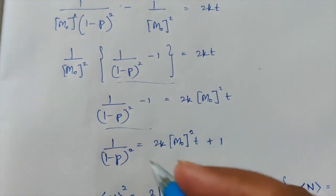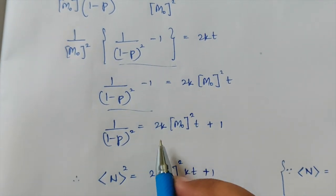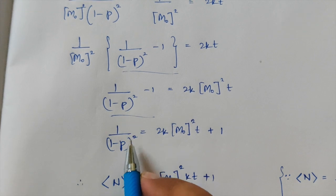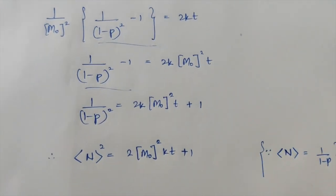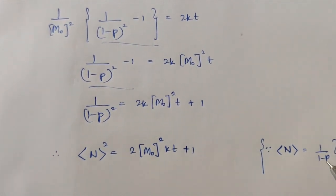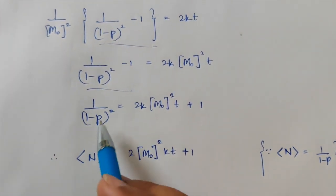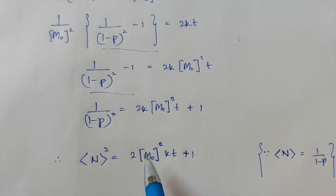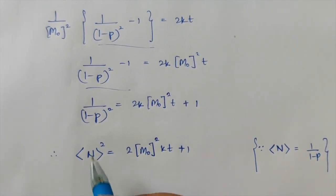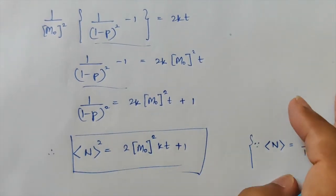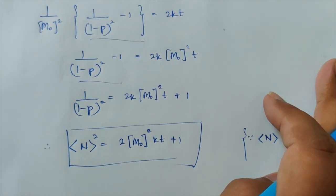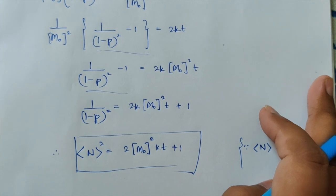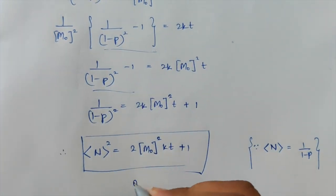Since N equals 1/(1-P) from the previous derivation, 1/(1-P)² equals N². Therefore N² equals 2kM₀²T plus 1. That is the required answer, which corresponds to option C.